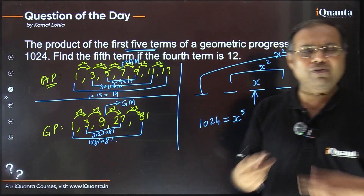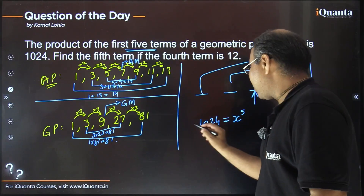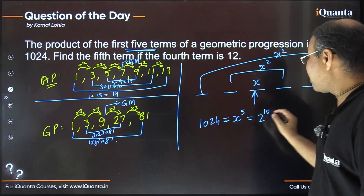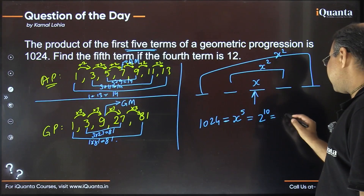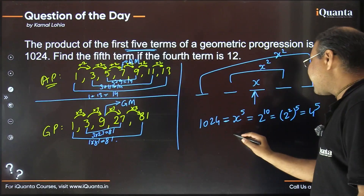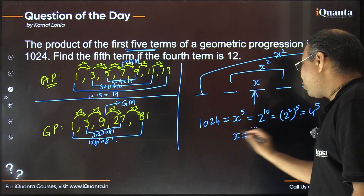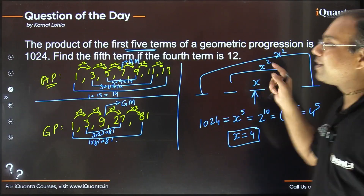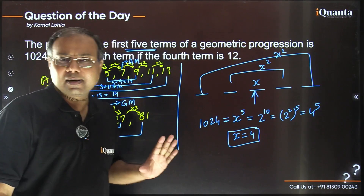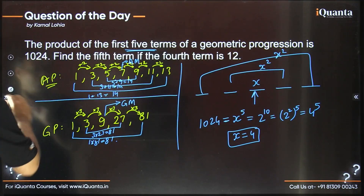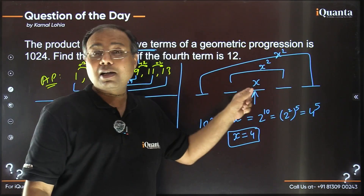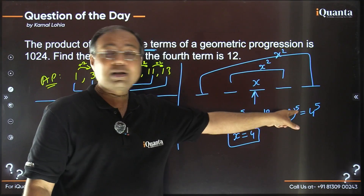Now 1024 — you should easily recognise this — it is 2 to the power 10. So x^5 = 2^10. That means x^5 = (2^2)^5 = 4^5. In other words, x = 4. So the third term — the middle term, the geometric mean of these five terms — is 4.